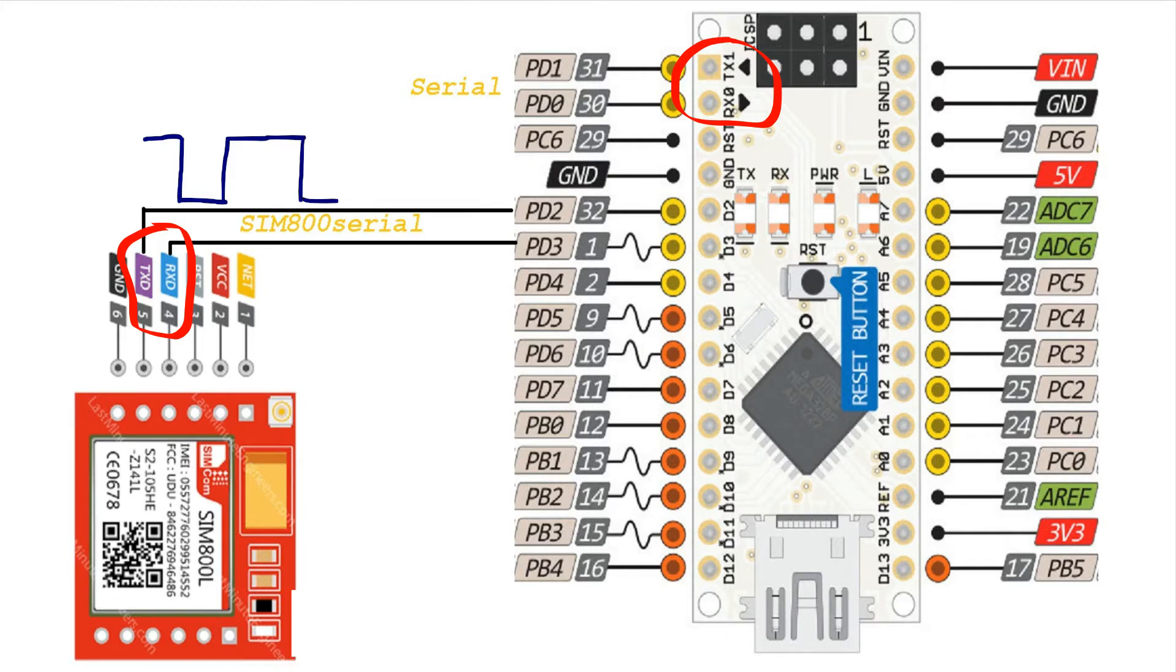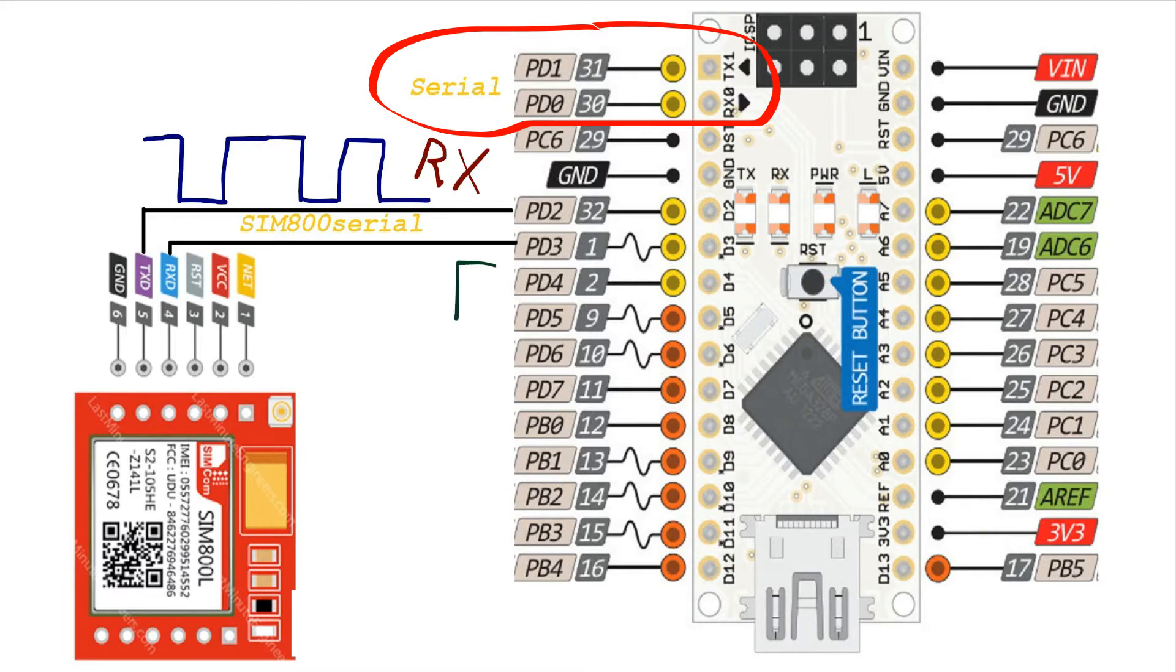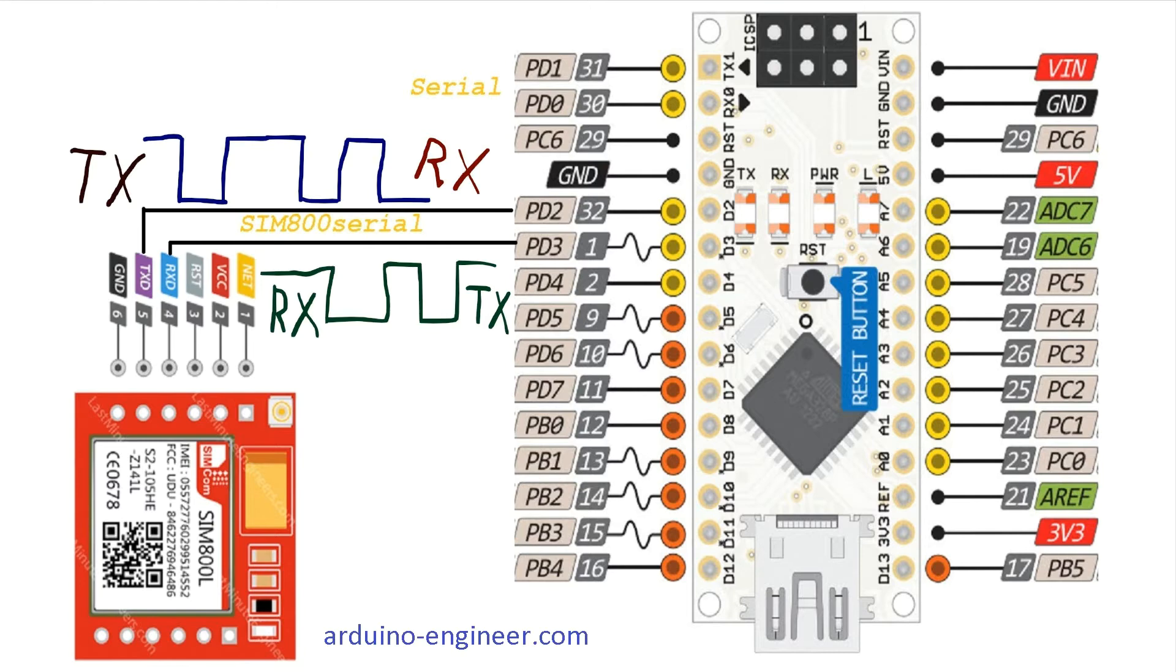The Arduino Nano unfortunately only has one physical UART port on board. Moreover, it is always busy when we load a new program into the controller or diagnose it in the port monitor. This diagram shows that we will connect the UART of the GSM module to the usual pins of the controller, which do not have a physical UART. But a special library will help us organize an artificial UART serial port on these pins with its own RX and TX.